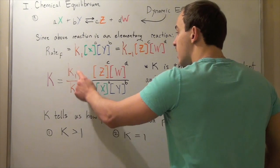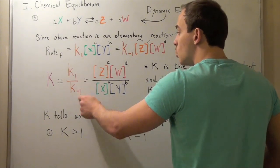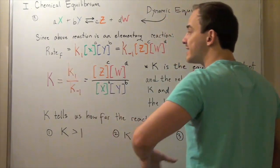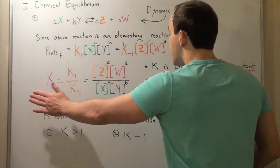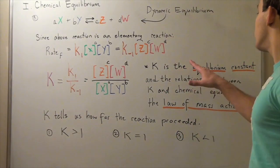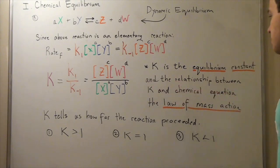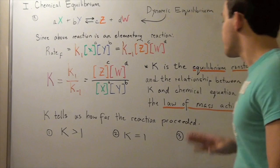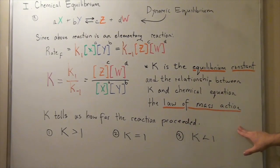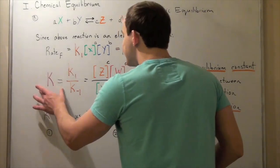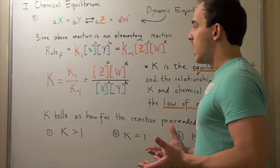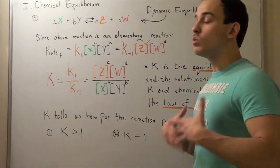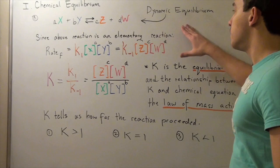Notice that these two rate constants are constants — they don't change at the same temperature — so we can represent their ratio as another constant, namely K. This K is known as the equilibrium constant, and the relationship between K and the chemical equation is known as the law of mass action. K is simply the ratio of the concentration of products to the concentration of reactants at equilibrium, and it tells us how far the reaction proceeded at equilibrium.